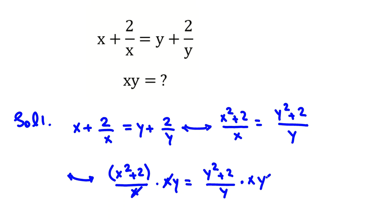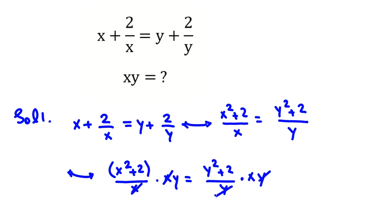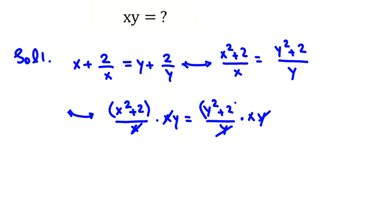You can cancel x. You can cancel y. If you multiply, y times this will be x squared y plus 2y equals xy squared plus 2x.